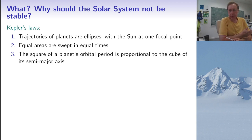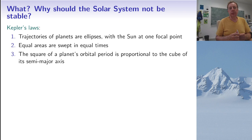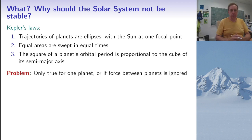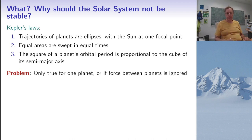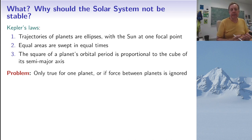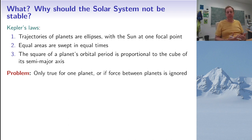The second law is the law of areas, saying that equal areas are swept in equal times, which implies that planets are faster when closer to the sun. The third law says the square of the period of a planet is proportional to the third power of its semi-major axis. Later, Isaac Newton justified these laws, showing his law of universal gravitation had Kepler's laws as a consequence. However, this is true only if there is one planet in the solar system, or if we ignore interactions between planets.